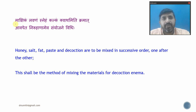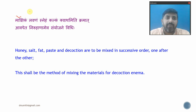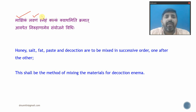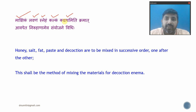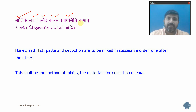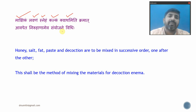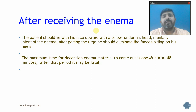The sequence of mixing ingredients for Niruha Basti is: Makshika (honey) is added to the bowl first, then salt is added and mixed together. Once properly bound, Sneha (oil) is added and mixed. Then Kalka is added. Finally, the Kashaya or Kwadha — the decoction prepared by boiling the drugs and reducing to 1/4 — is added last. This specific sequence ensures the mixture is properly combined and effective.